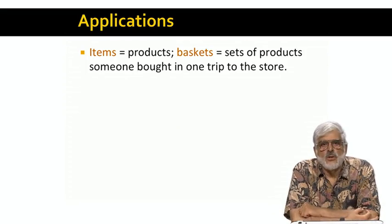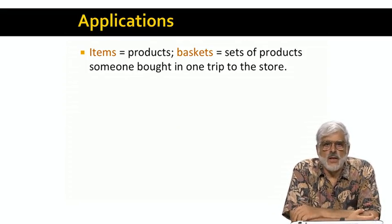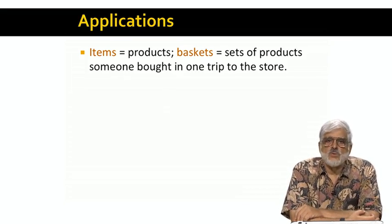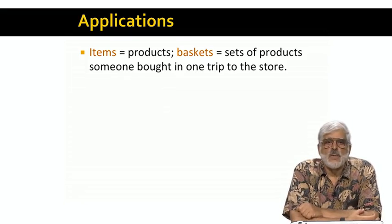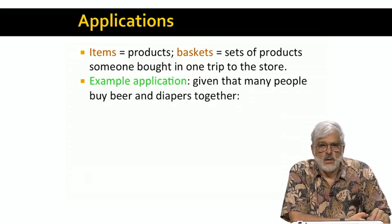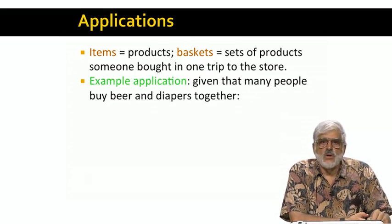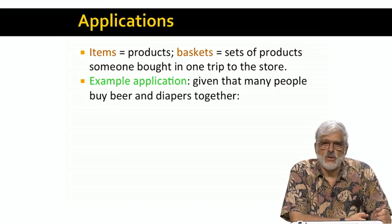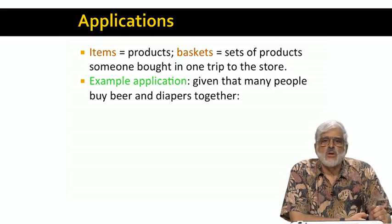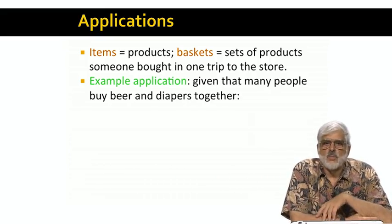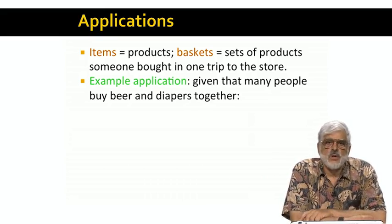The original application for this sort of analysis was looking at the things people bought together in a store. In this case, the items really are the items one might buy, and the baskets are sets of items bought together by one purchaser. There is a story that the first interesting discovery of a frequent item set was that diapers and beer were frequently bought together. And once you think about it, it makes sense. If you're buying diapers, you probably have a baby at home. If you have a baby at home, you probably aren't going out to a bar to drink, so you bring the beer home.